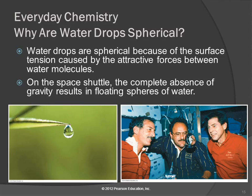The reason that water forms spherical drops is because of surface tension. A sphere is a geometric shape with the smallest surface area. If you take the same volume and make it a square, the surface area is bigger. So water drops are spherical because they're minimizing the surface area.